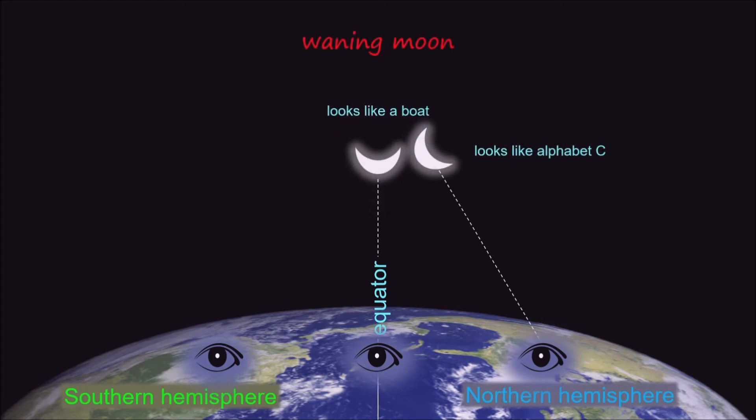For waning moon, which means diminishing moon, it looks like a boat to an observer at the equator. At any vantage point on the Northern Hemisphere, it looks like the alphabet C to the observer. At any vantage point on the Southern Hemisphere, it looks like the alphabet E to the observer.